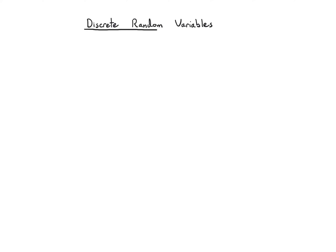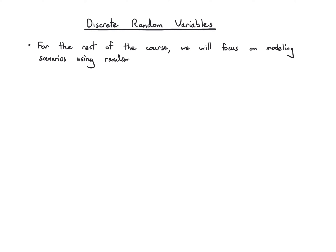On to chapter two, which is about discrete random variables. For the remainder of this course, what we're going to be doing is shifting our modeling to just random numbers. Before, we had any kind of object — maybe random cards, letters, words, movies — whatever came to mind, and now we're going to be solely focused on random numbers.